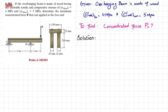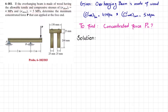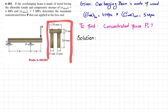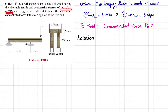Welcome back. Problem 6-103. The statement is: if an overhanging beam is made up of wood having allowable tensile stress of 4 megapascal and compressive stress of 5 megapascal, determine the maximum concentrated force that can be applied at the free end. You can see this is an overhanging beam with a P load at the free end, and the cross section of the beam is shown.